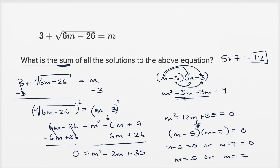And if you just want to verify that these actually work, try them out. Six times five is going to be 30 minus 26, which is four. The principal root of four is positive two. Three plus two is equal to five. It's equal to m.